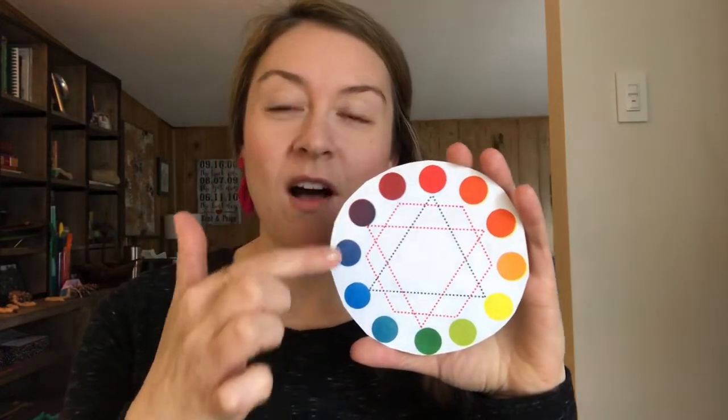And I want you to put them, all the objects that you find, in a circle. It can be on a table, on the floor, on your bed. It doesn't matter. And put them in color wheel order to see if you can make a complete circle with all of your items.